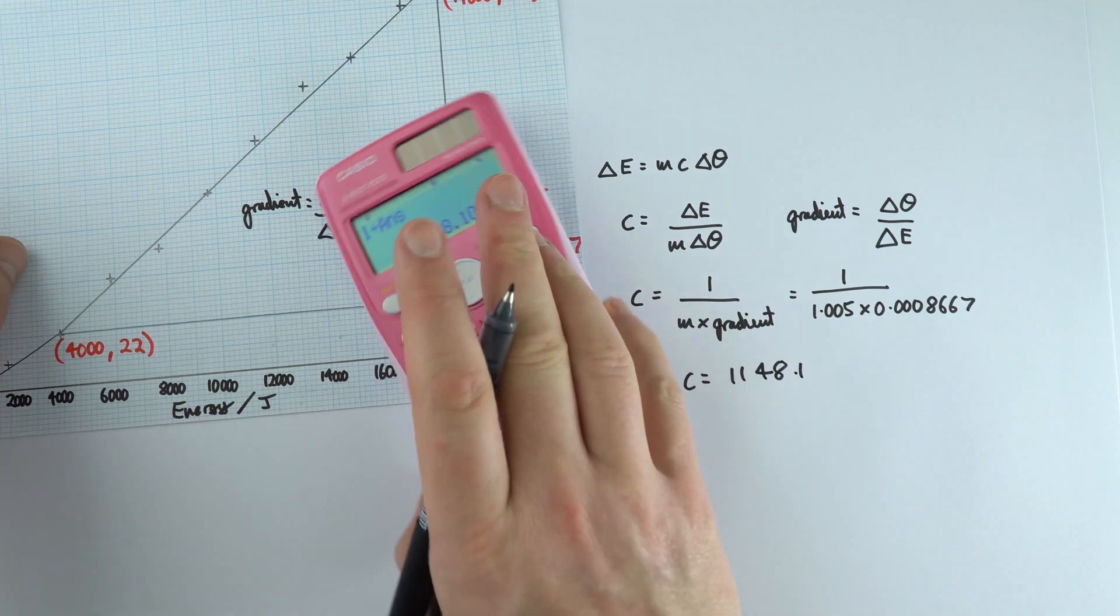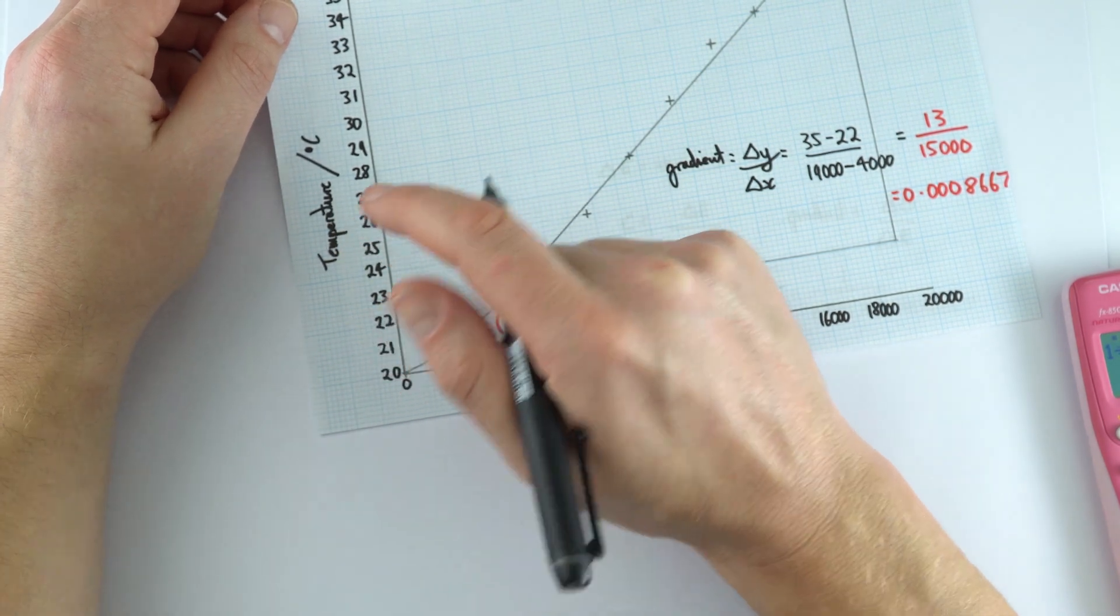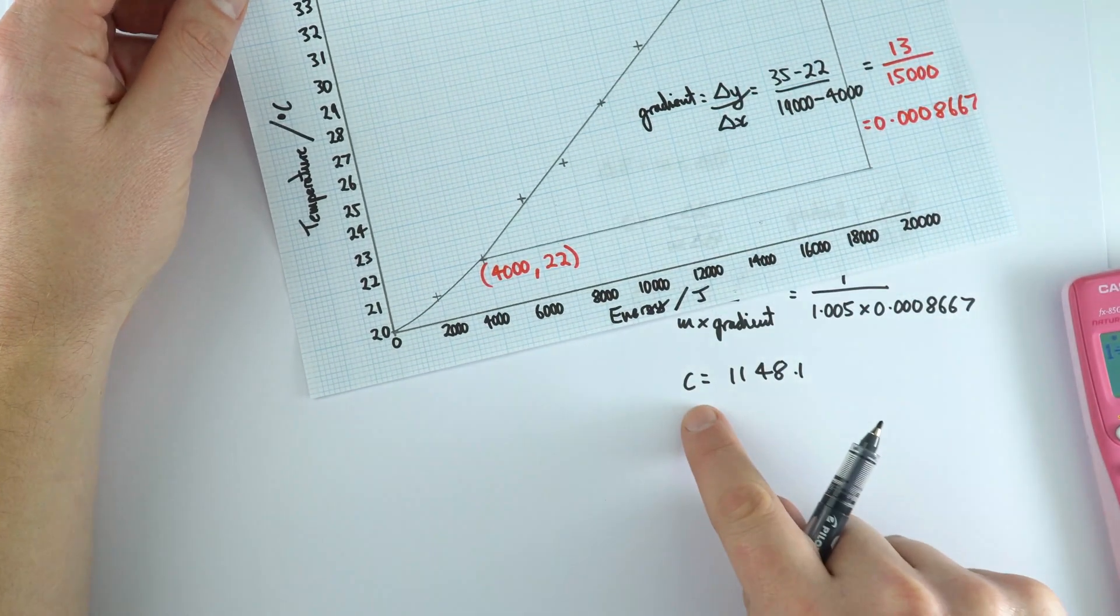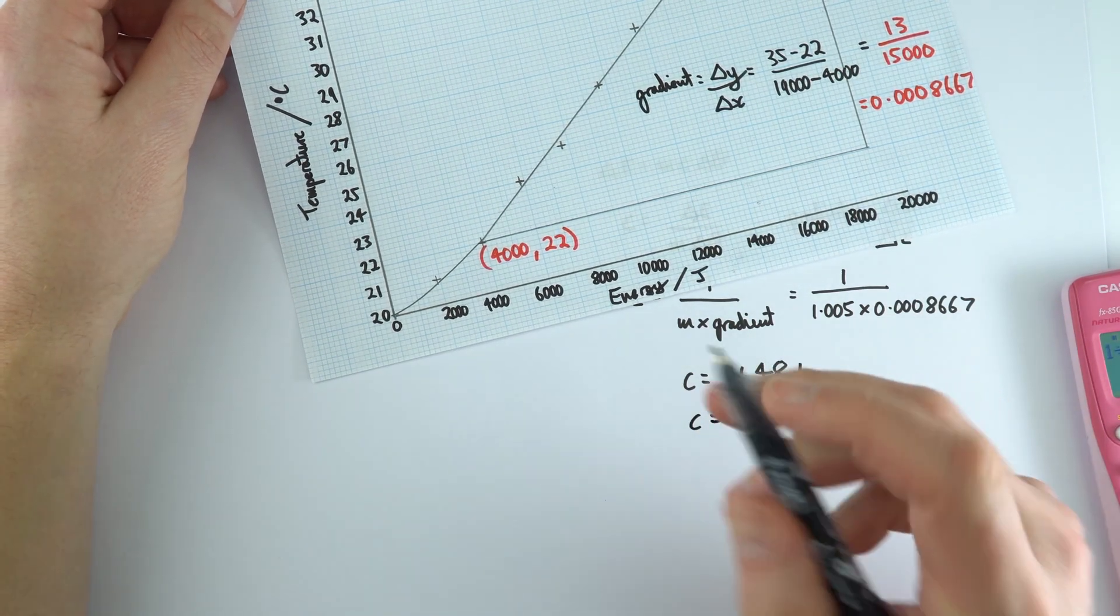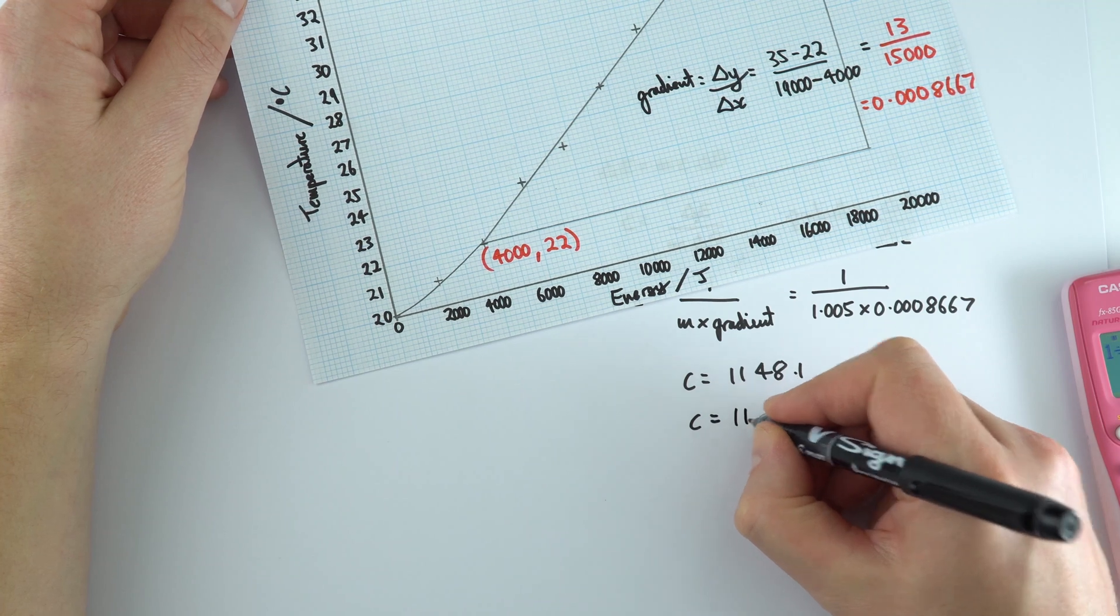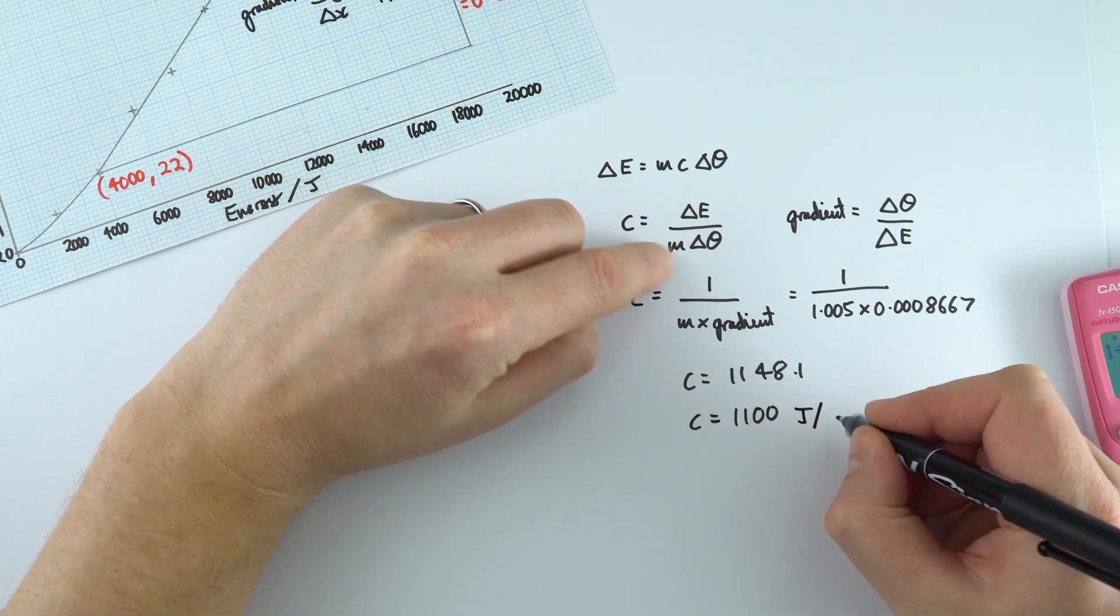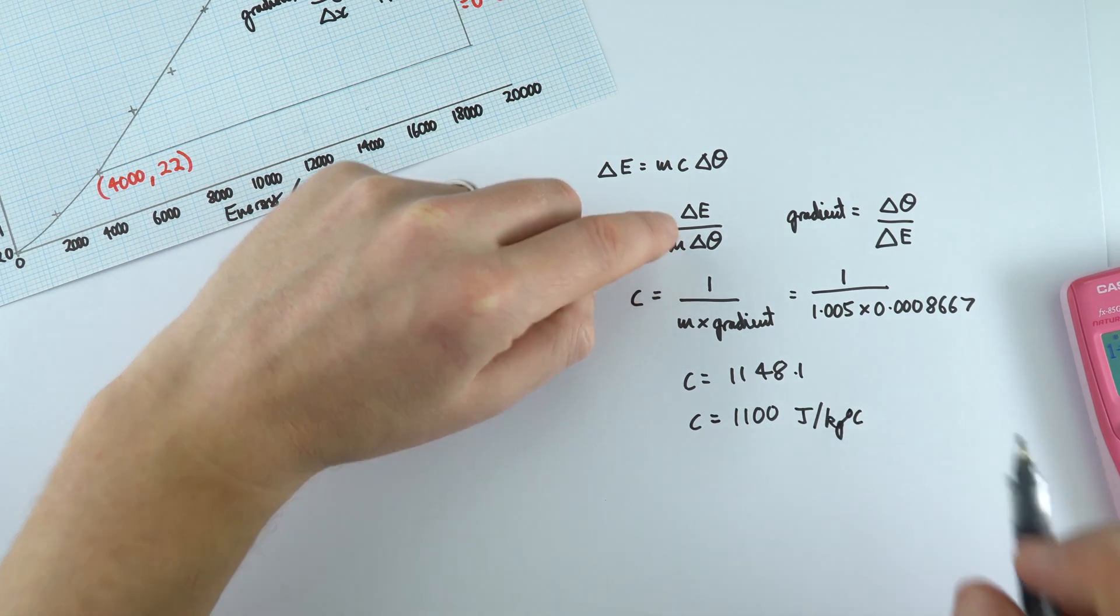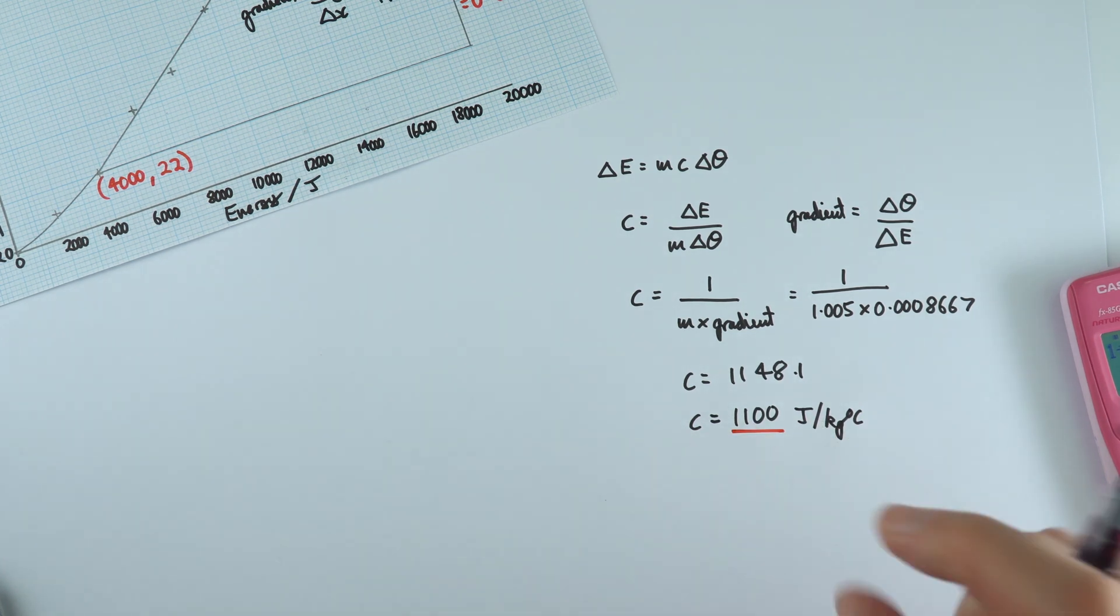Now really, because we could only measure the temperature to the nearest degree, and that's something which is a bit tricky with the thermometers, is it 31, 32? And it's really your judgment about the value that you take. We should only really give our final answer to two significant figures as well, like our raw data. So here, we can say that the specific heat capacity of aluminum is about 1100. And the units, because we're looking at joules per kilogram per degree, are joules per kilogram per degree Celsius. So this was my final answer for the specific heat capacity of aluminum, which is actually bigger than the value that we tend to normally find.